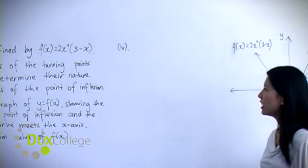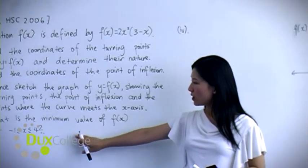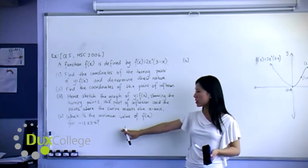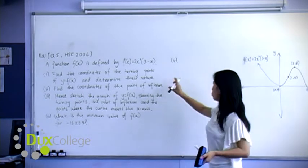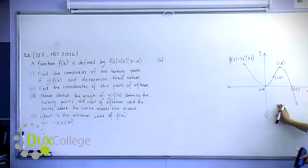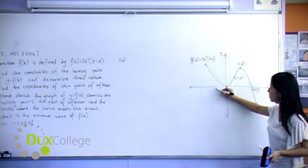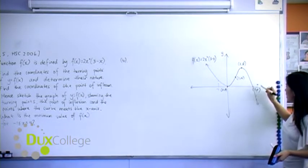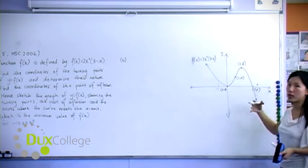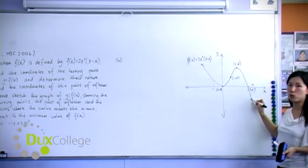Alright, finally the last part. The last part is: what is the minimum value of f(x) for x between -1 and 4? Now you can use your diagram to find this out. So you can see that -1 is somewhere here. So between -1 and 4, which is somewhere here, the minimum value must occur when x equals 4.